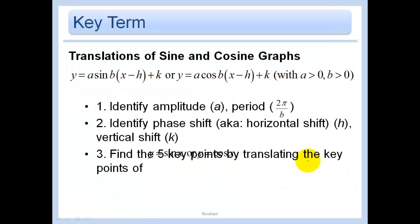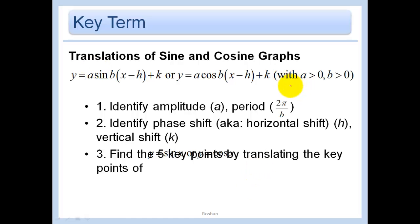In today's lesson, we're going to be doing translations of sine and cosine graphs. We have our base case y equals sine x, and we're going to be doing some transformations to it. We're going to be looking at y equals a sine(bx minus h) plus k, or y equals a cosine(bx minus h) plus k, and what we're talking about applies when a is greater than zero and b is greater than zero.